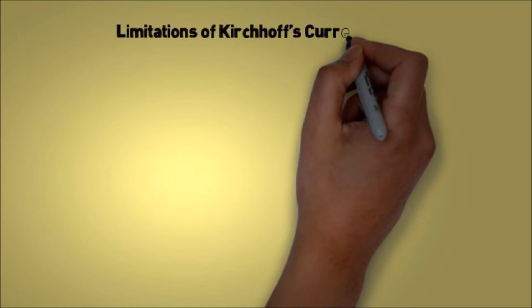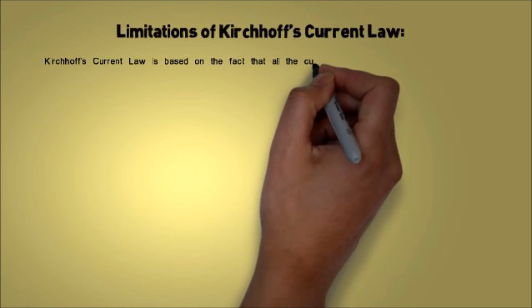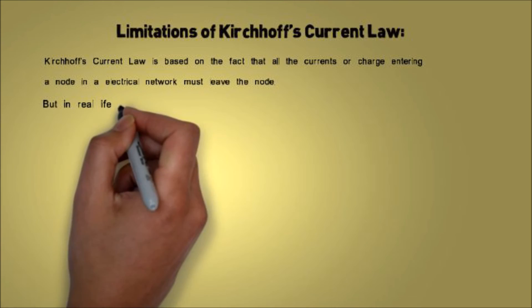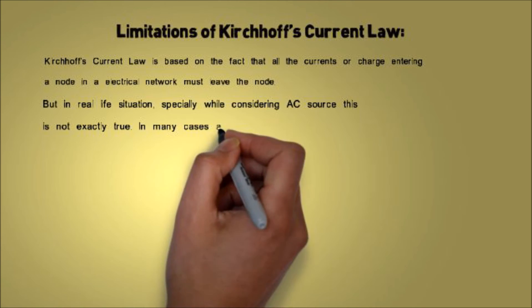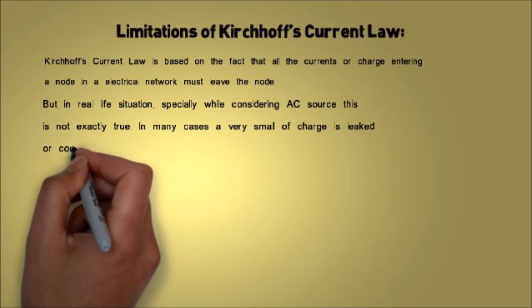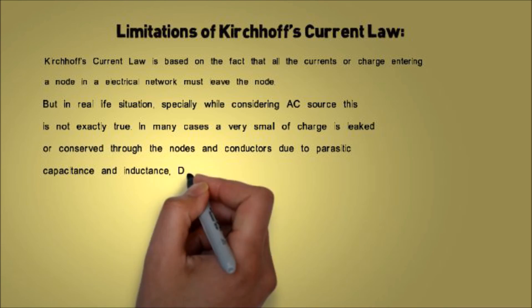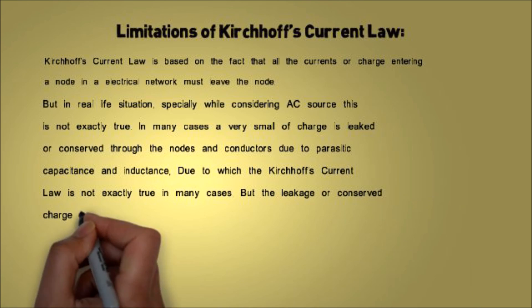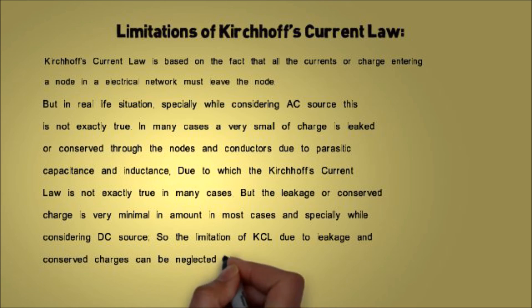Regarding the limitations of Kirchhoff's Current Law: KCL is based on the fact that all the currents or charge entering a node in an electrical network must leave the node. But in real-life situations, especially when considering an AC source, this is not exactly true. In many cases, a very small charge is leaked or stored through nodes and conductors due to parasitic capacitance and inductance, meaning KCL is not exactly true in those cases. However, the leakage or conserved charge is very minimal in most cases, especially with DC sources, so this limitation can be neglected in most practical scenarios.